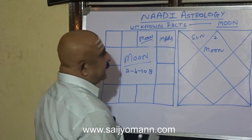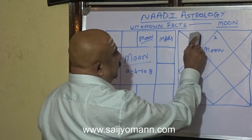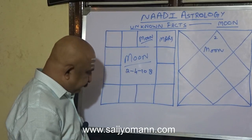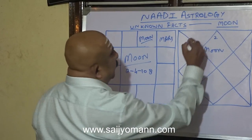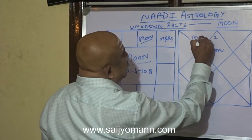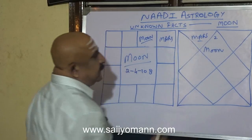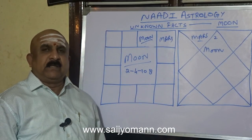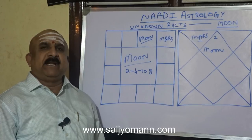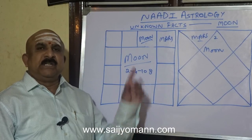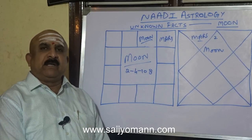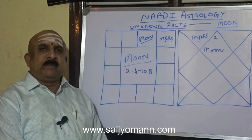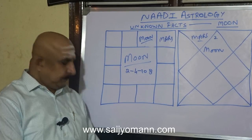When Mars sits in the 2nd house, she will be very rough in her talks, but she will have landed property income, or she may work in a government concern, or she may have a government appointment.